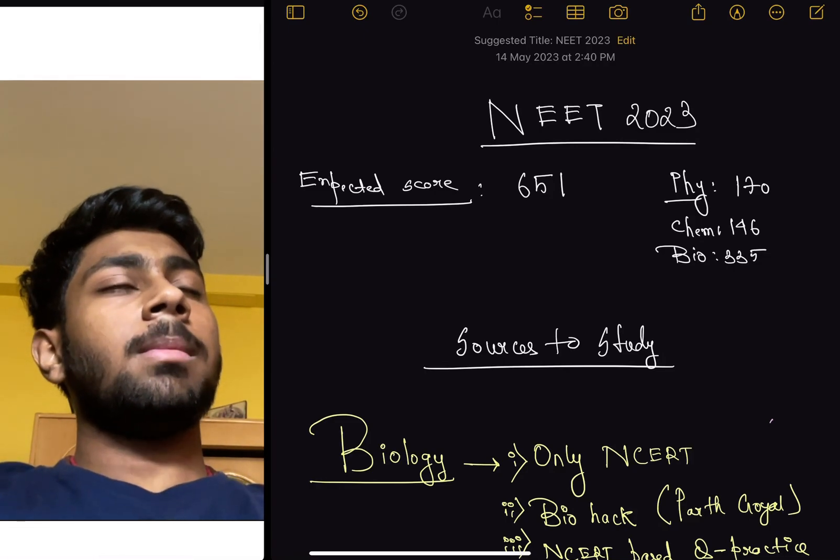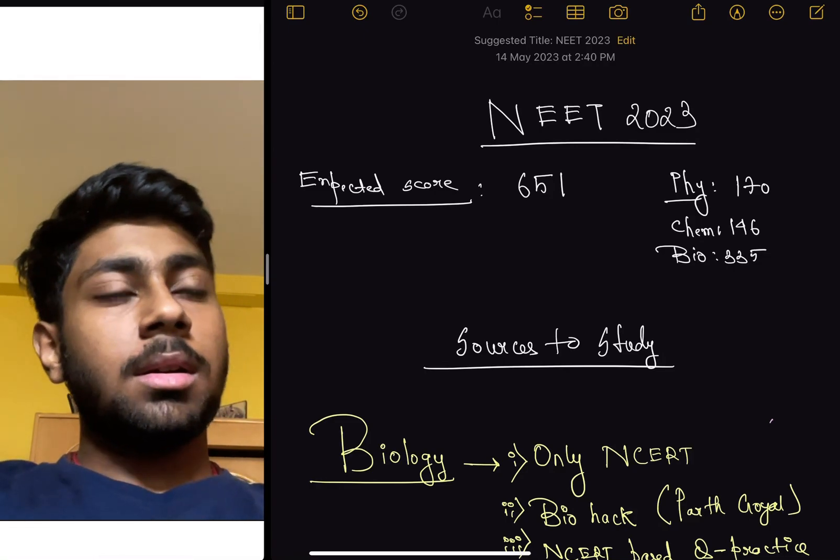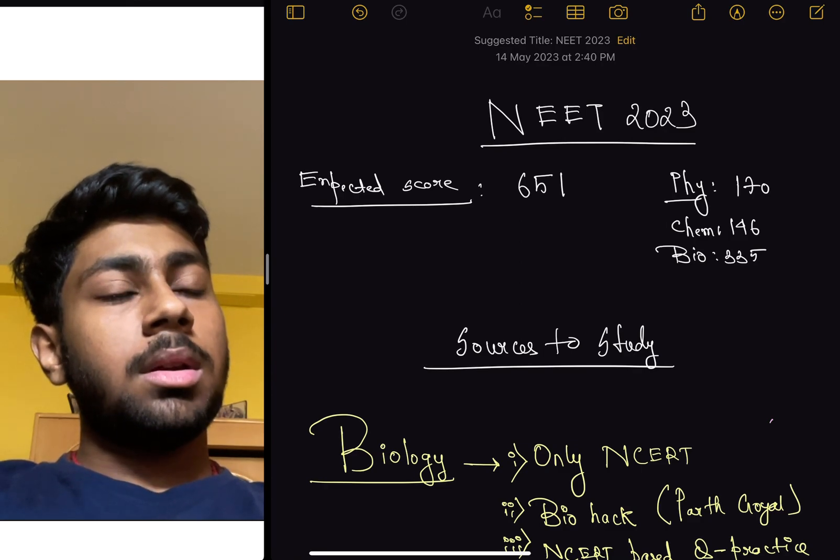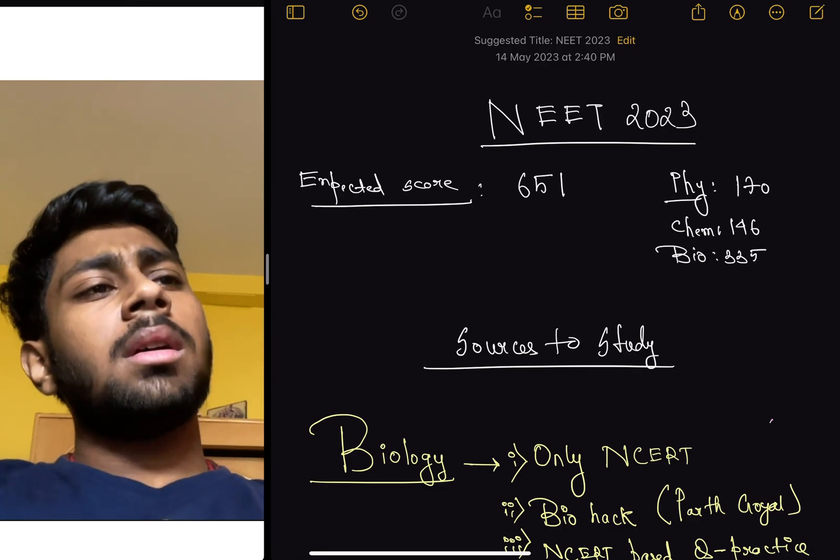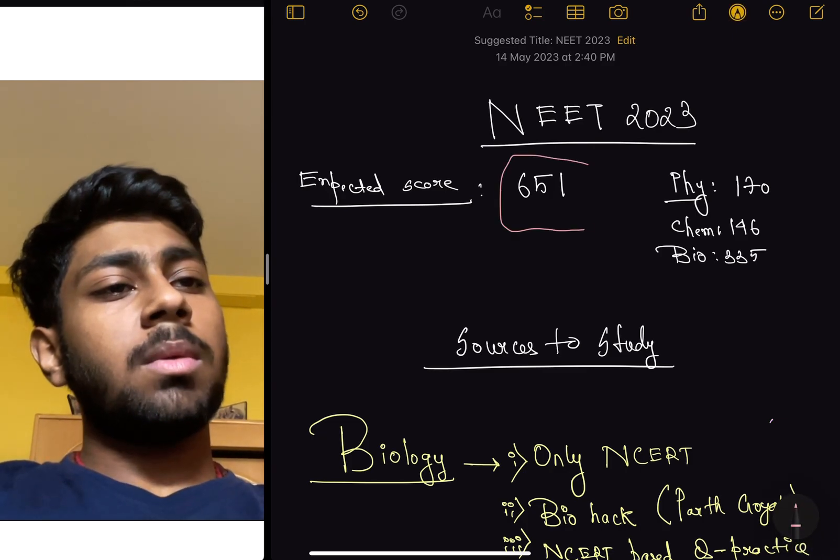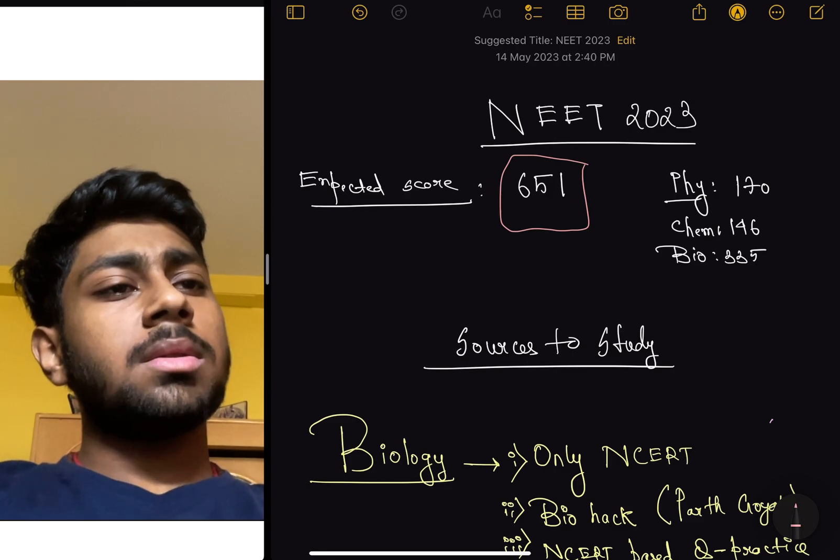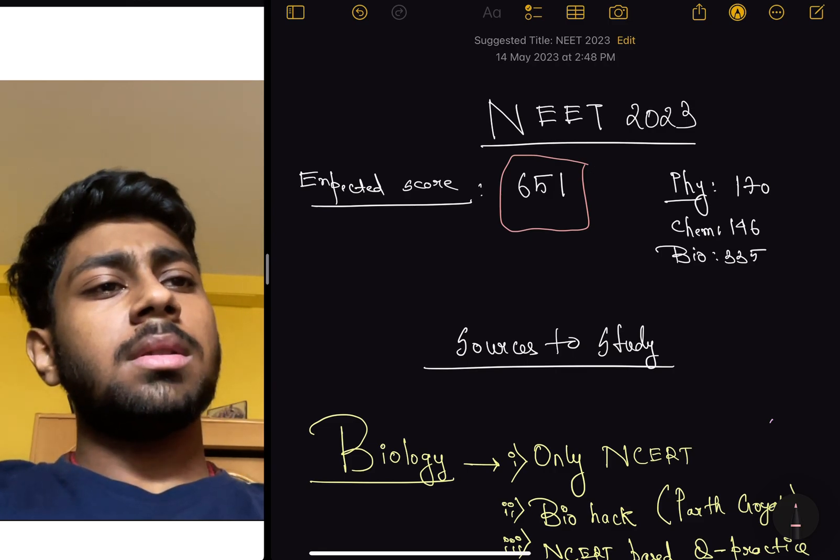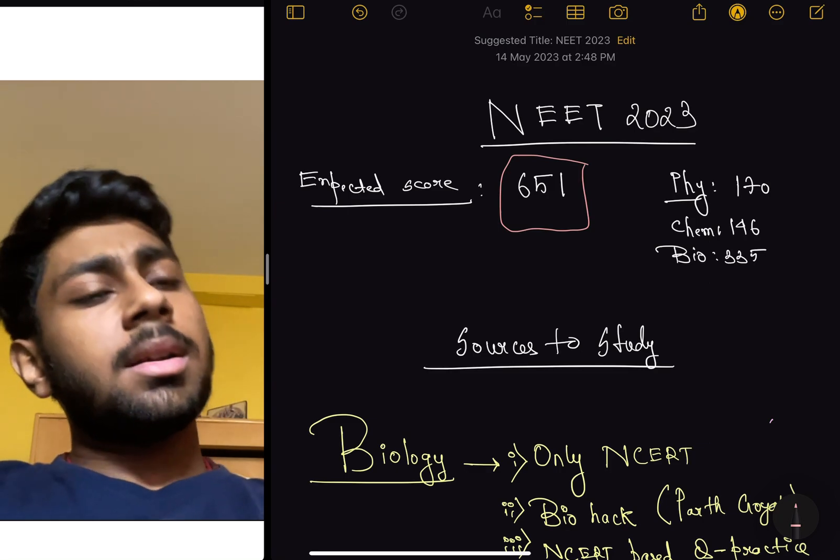Hello everyone, my name is Orkodhi Bainerji. This year I gave the NEET 2023 exam and I'm expecting a score of nearly 651. It can vary from 646 to 651 because one question of chemistry is getting controversial, but otherwise my expected score is 651.